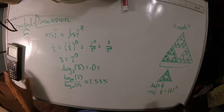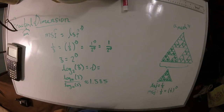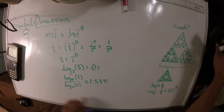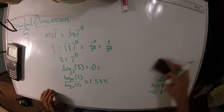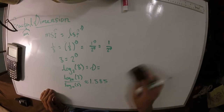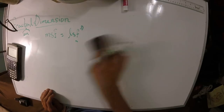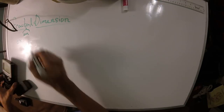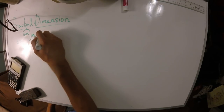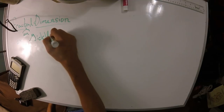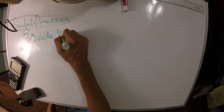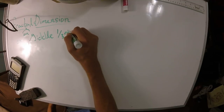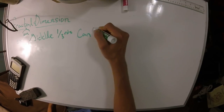Now I'm just going to run through one more example of a fractal that follows this concept. We'll do more practice with this in class because it is very confusing, and it's normal to be confused by it. Let's consider another example - the middle thirds Cantor set. This is one of the simplest fractals in existence.